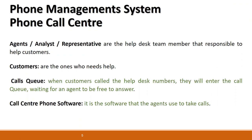At level one you might be called an analyst or representative. Customers — that's pretty obvious who they are. When a customer calls, they don't always talk to an agent immediately; they get put in a queue, talking to a robot first.